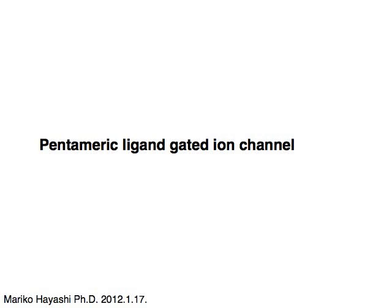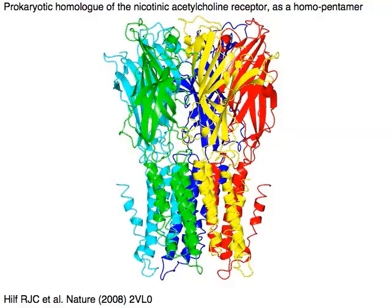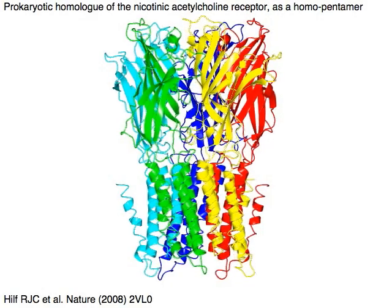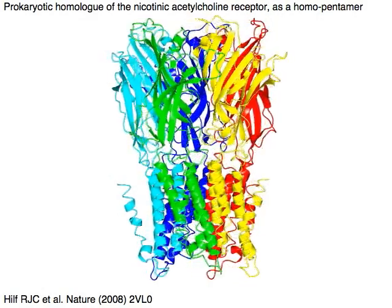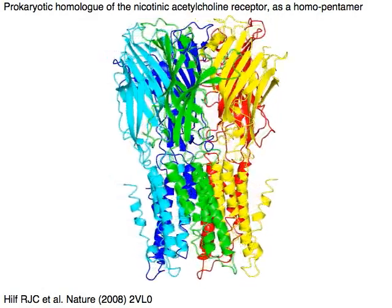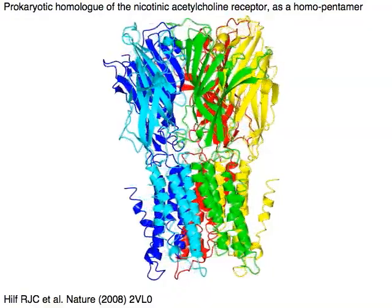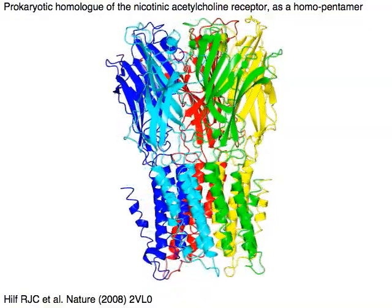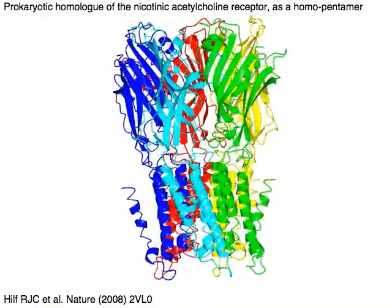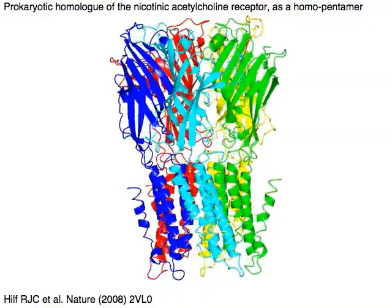Pentameric ligand-gated ion channel: a prokaryotic homologue of the nicotinic acetylcholine receptor as a homo pentamer — the GLIC (Gloeobacter violaceus) yeast ligand-gated ion channel.